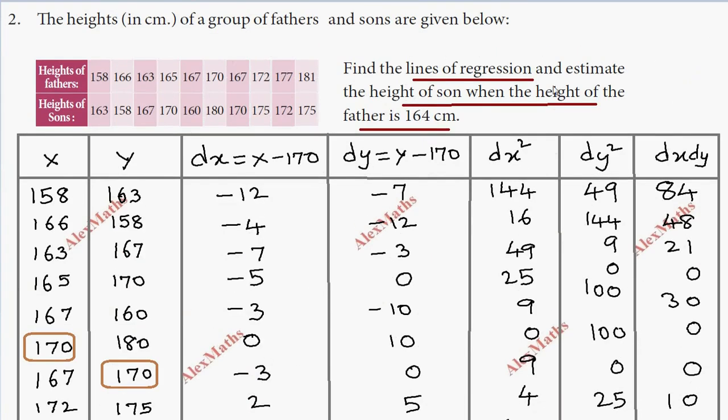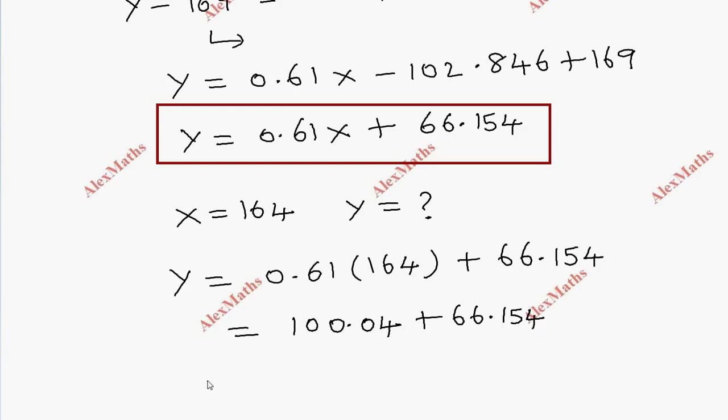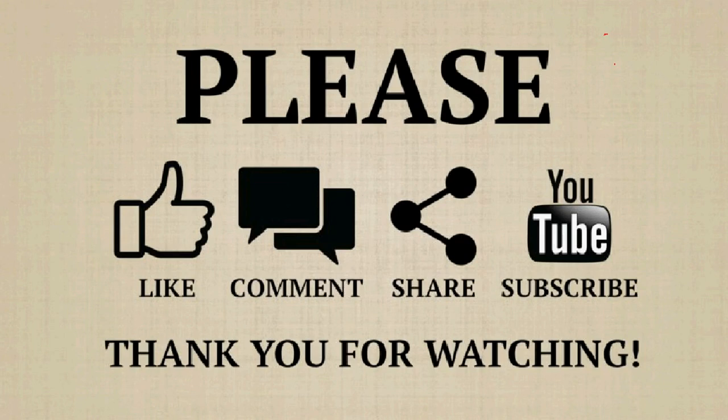The last part of the question asks to estimate the height of the son when the height of the father is 164. The father is x, so x equals 164. Using the equation y equals 0.61 times 164 plus 66.154, which gives 100.04 plus 66.154. So y equals 166.194.